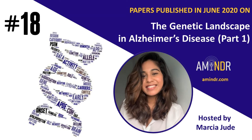Let's first begin with the papers related to Presenilin studies. The first paper is titled Pathogenic Presenilin-1 T319I mutation in two Korean patients with early-onset Alzheimer's disease. This paper is by first author Baginski and last author Kim, published in the journal Diagnostics. The investigators report a probable pathogenic threonine-119 isoleucine mutation in Presenilin-1 in two unrelated early-onset Alzheimer's disease Korean patients.